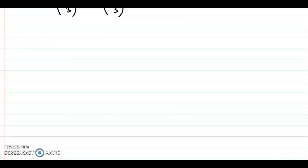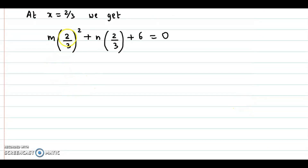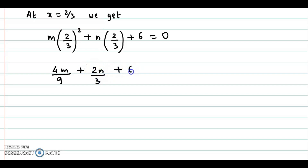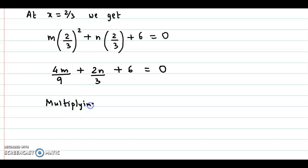Simplifying further, 2 by 3 the whole square is 4 by 9. So we have 4m upon 9 plus 2n upon 3 plus 6 is equal to 0. We simplify this equation by multiplying throughout by 9, because the LCM of 9 and 3 is 9, to eliminate the denominators.